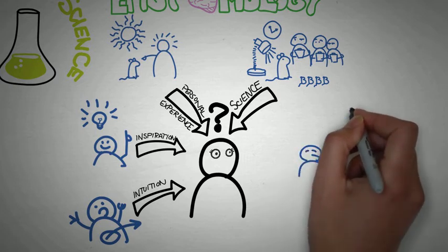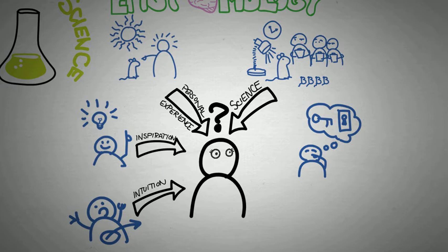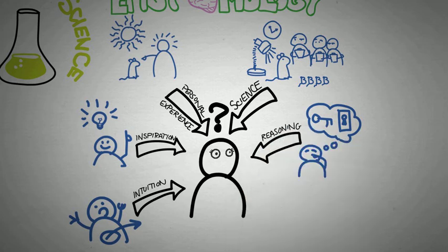Another type is reasoning. So you don't have any more external information, but just based on the things that you know and using processes like logic, you're able to gain knowledge about your surroundings.